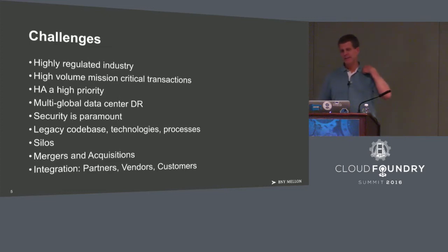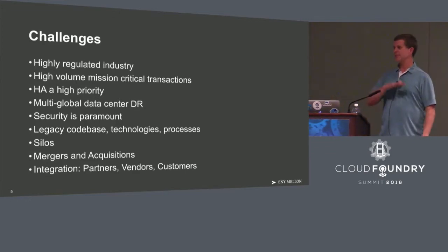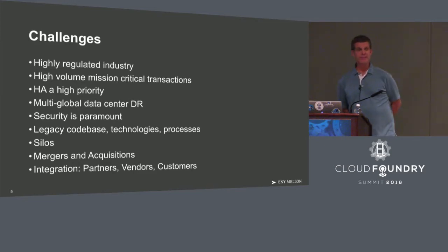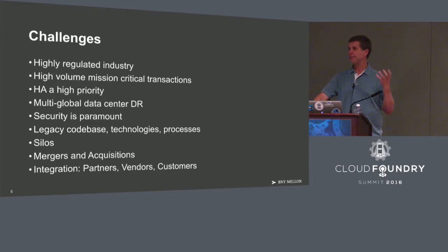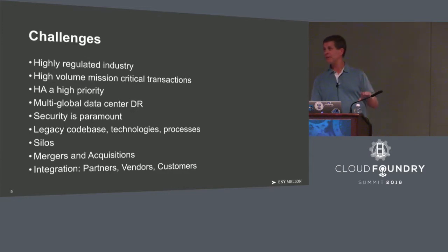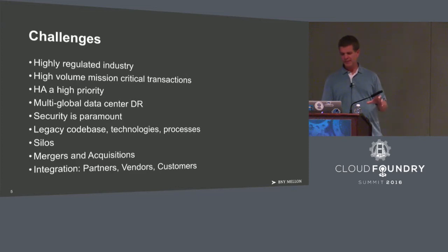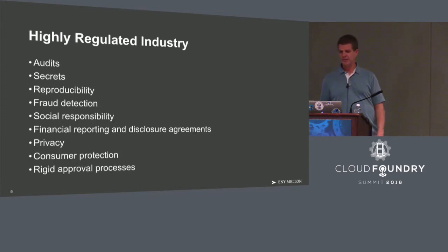It's a huge financial industry company in a very highly regulated industry. We have massive amounts of transactions going through our system — very high volume. To the point where if something fails it could potentially affect the economy of the country. High availability is absolutely essential for our operations. We have multiple data centers across the planet. Security is very important. We have a lot of old code, legacy apps — vintage apps — and more modern stuff, different hardware and software architectures, and integration with vendors and partners.